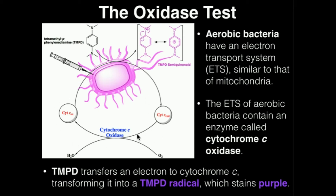So as long as cytochrome C can pick up an electron from TMPD, we know that the bacteria has cytochrome C oxidase, and it would produce a positive oxidase result. But we have to have some way of seeing this. It turns out that when TMPD delivers an electron to cytochrome C, it itself gets oxidized and it changes color into a purple color. We would say TMPD transfers an electron to cytochrome C, transforming it into a TMPD radical, which stains purple.